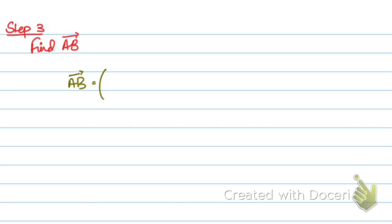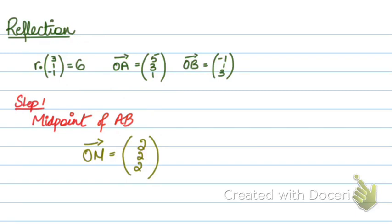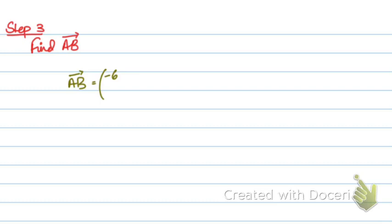So minus 1 minus 5, minus 6. Then we have 1 minus 3 and 3 minus 1. So 1 minus 3, minus 2. 3 minus 1, 2. So this is the vector AB.